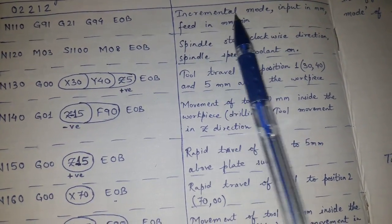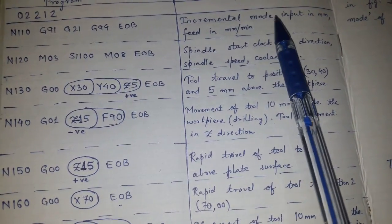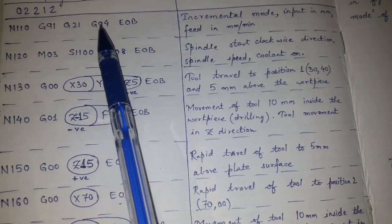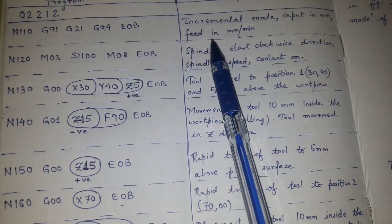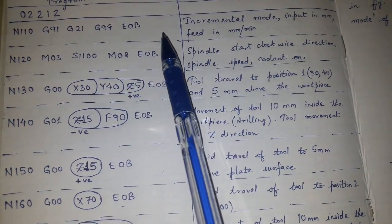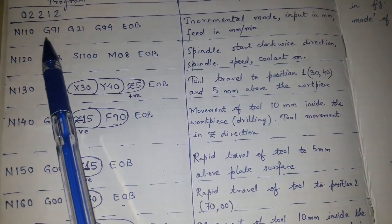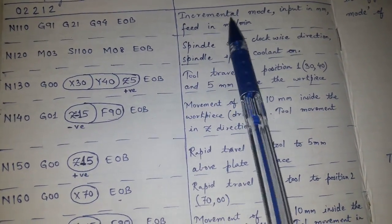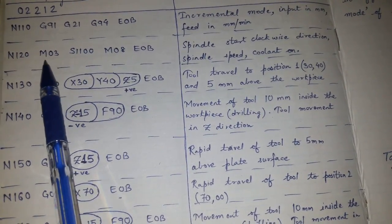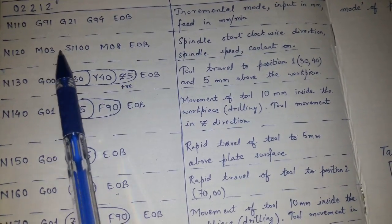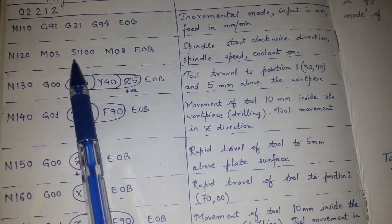G91 means incremental mode. G21 means all inputs will be in millimeters. G94 means feed rate is in mm per minute. End of block indicates that particular line is complete. N120 contains M03, which starts the spindle clockwise, and S1100 sets the spindle speed to 1100 RPM.